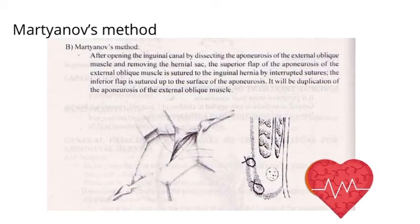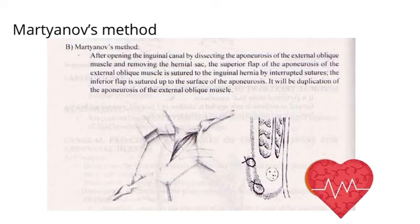The next method is Martianov's method. After opening the inguinal canal by dissecting the upper aponeurosis of the external oblique muscle and removing the hernia sac, the superior flap of the upper aponeurosis of the external oblique muscle is sutured to the inguinal ligament by interrupted sutures. The inferior flap is sutured up to the surface of the upper aponeurosis, creating a duplication of the upper aponeurosis of the external oblique muscle.